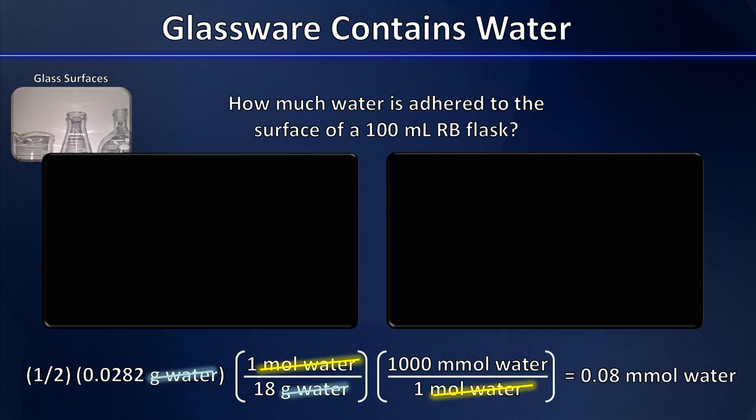So flame drying not only our round-bottom flasks in which we run reactions, but any glassware that our reagents may come in contact with, can help us mitigate the potential damage that water can do in certain chemical reactions. That's all for now everyone. Thanks for watching. I'm Professor Davis from ChemSurvival.com and the YouTube channel ChemSurvival, and as always I'll see you in my next video.